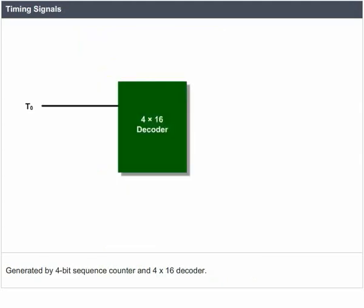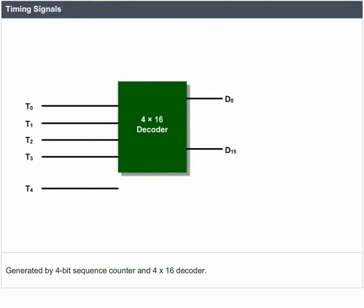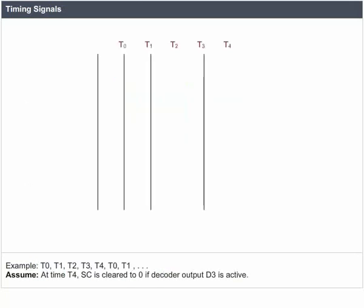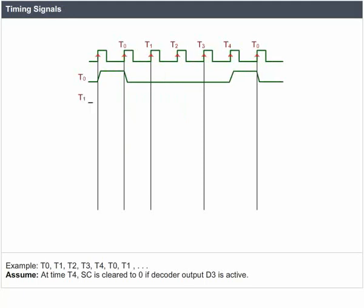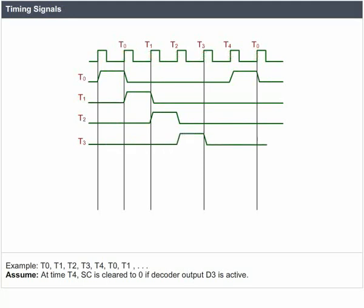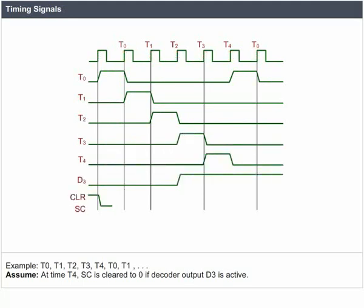Timing signals are generated by a 4-bit sequence counter and a 4×16 decoder. The SC can be incremented or cleared. Example: T0, T1, T2, T3, T4, T0, T1, and so on. Assume that at time T4, SC is cleared to 0 if decoder output D3 is active.